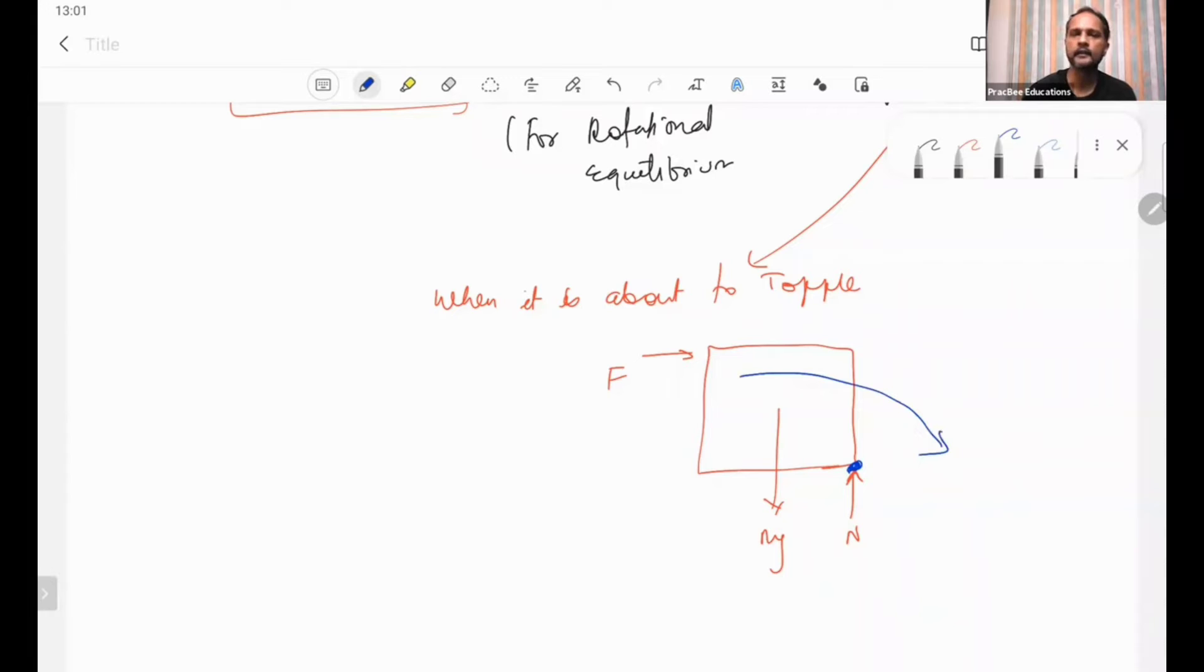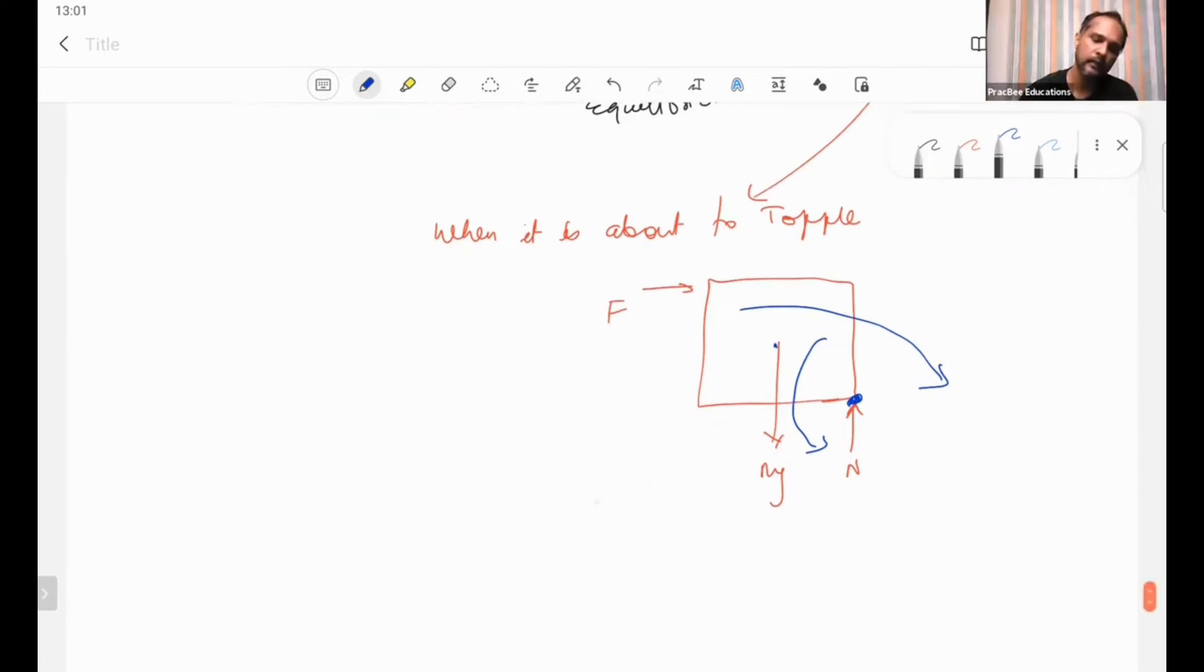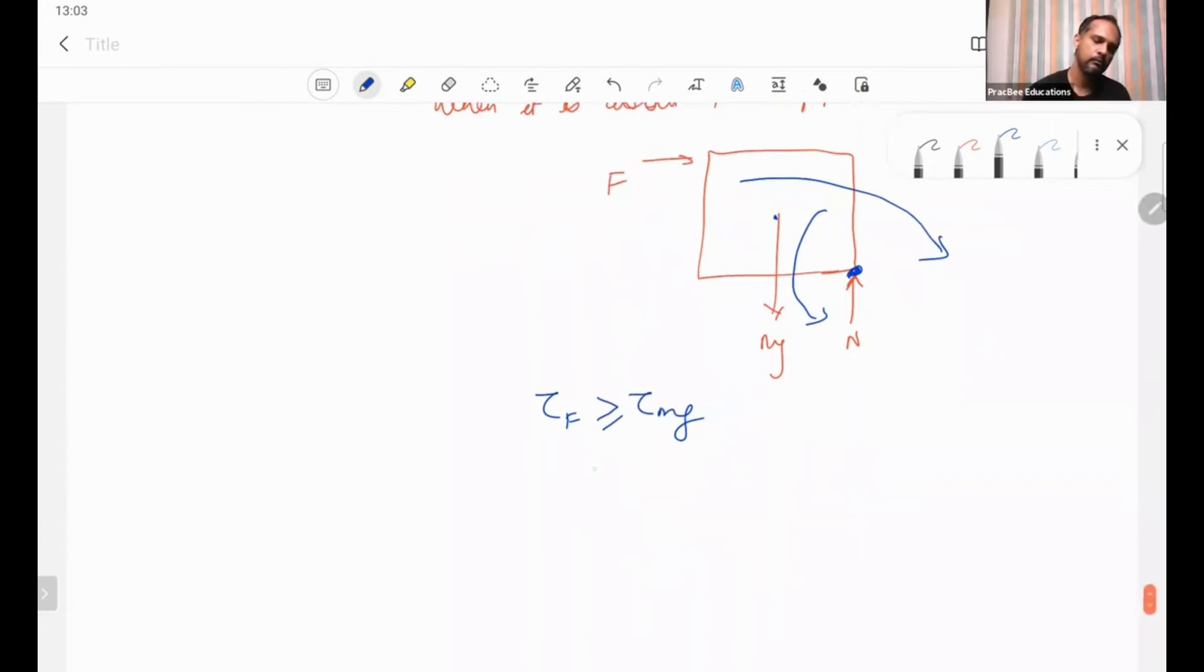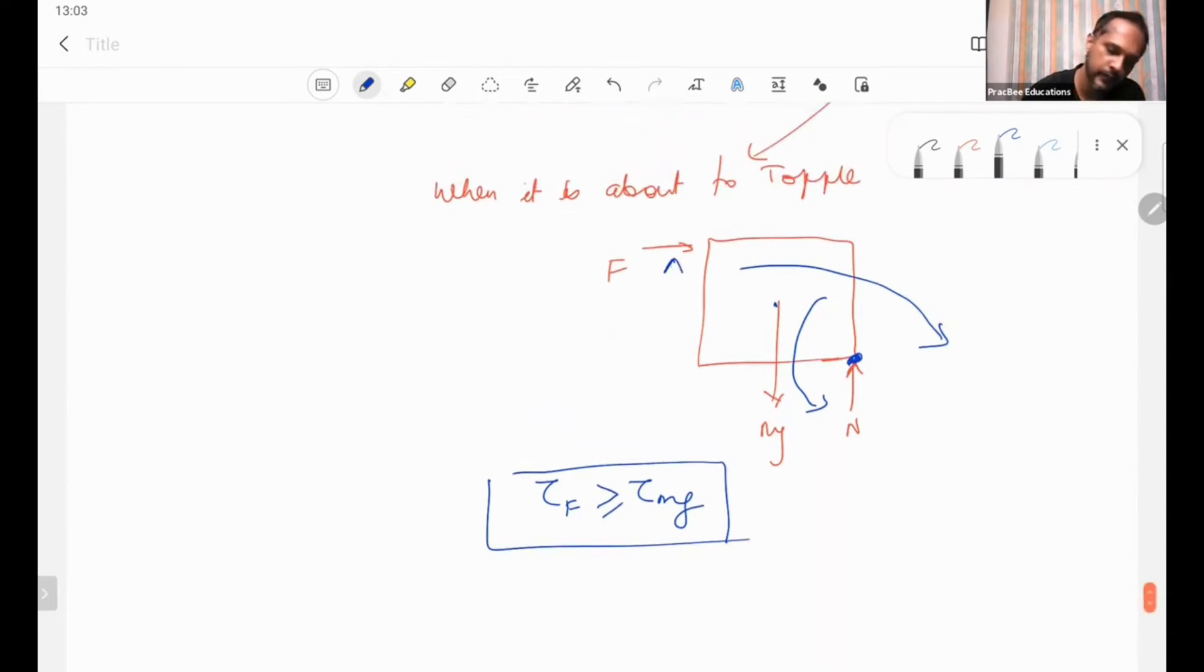F will try to rotate it like this about this point. So when it is about to topple, torque due to F has to be greater than torque due to mg. Now torque due to F, this is the condition for what we said is toppling.